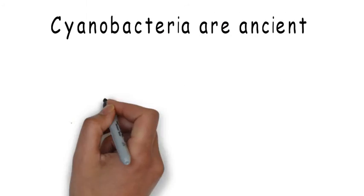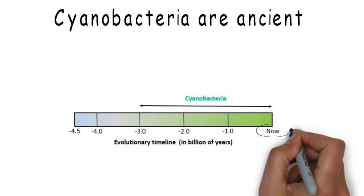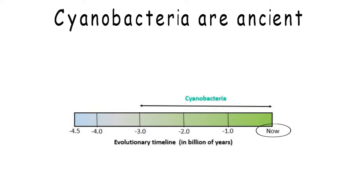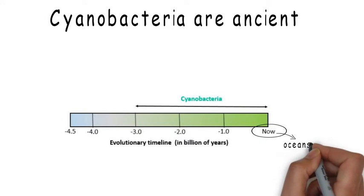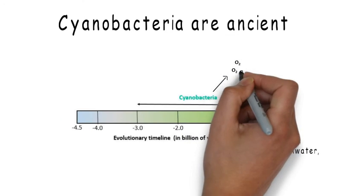Cyanobacteria are ancient. Three billion year old fossils of cyanobacteria have also been found. Even today, cyanobacteria are abundant in the environment. They are found in oceans, freshwater and soil. They are among the world's most important oxygen producers.